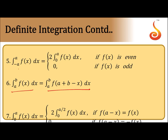Property: integral from -a to a of f(x)dx equals twice the integral from 0 to a — the interval splits into (-a to 0) and (0 to a). If f(x) is an even function, it equals 2·integral from 0 to a of f(x)dx. If f(x) is an odd function, it equals zero.